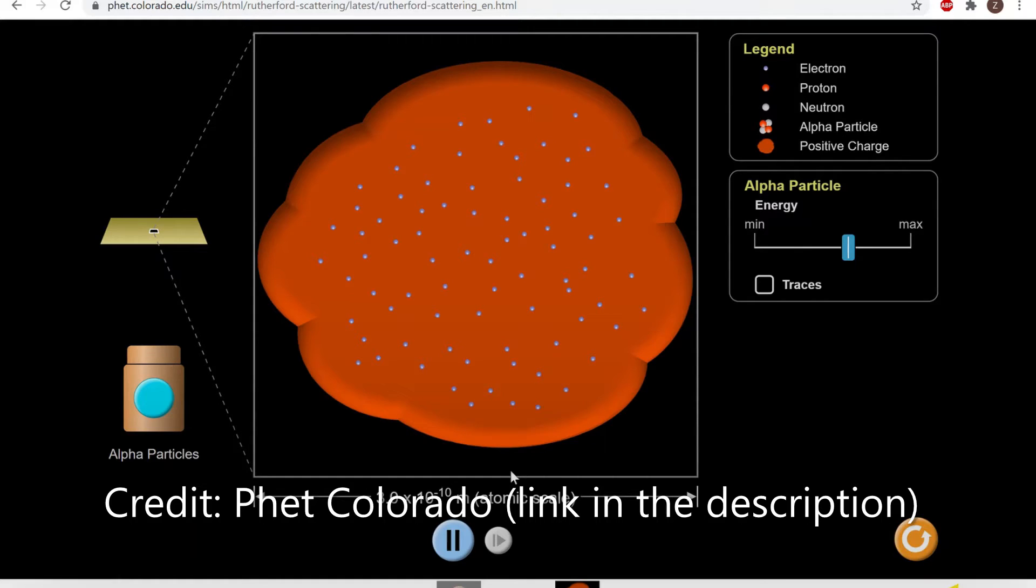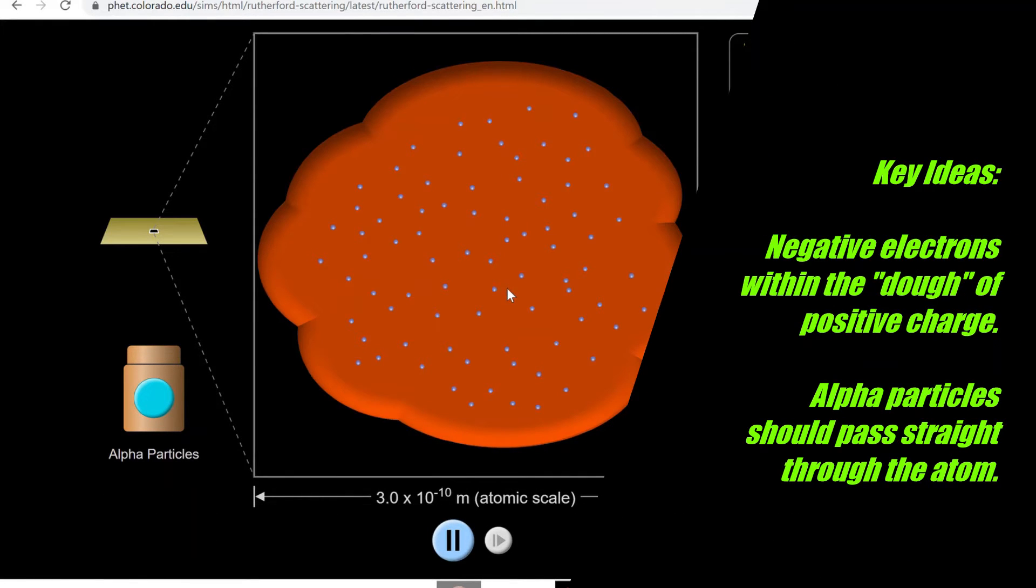Now this is the plum pudding model of the atom. If you're in the USA you may have heard of this as being referred to as the chocolate chip cookie model of the atom. JJ Thompson proposed this shortly after the discovery of the electron. We needed a way to make the atom electrically neutral. In this model, the electrons are represented by these bluish dots over here and they're located within a sea of positive charge with the atom being electrically neutral. The amount of positive charge equals the total amount of negative charge.